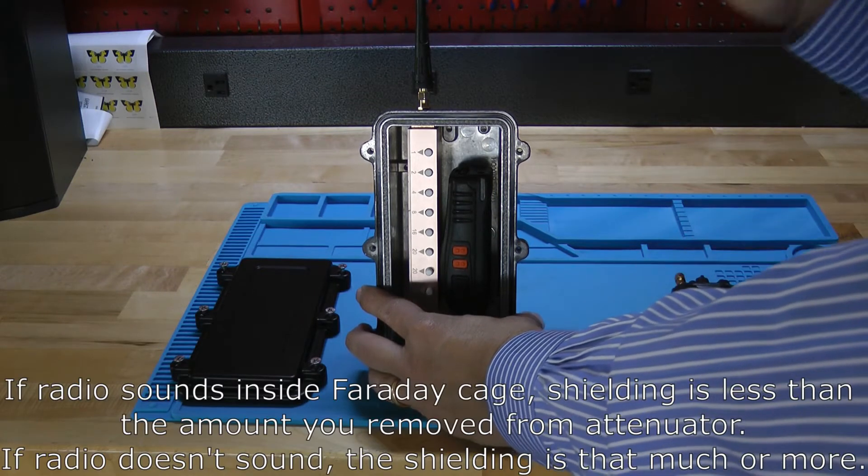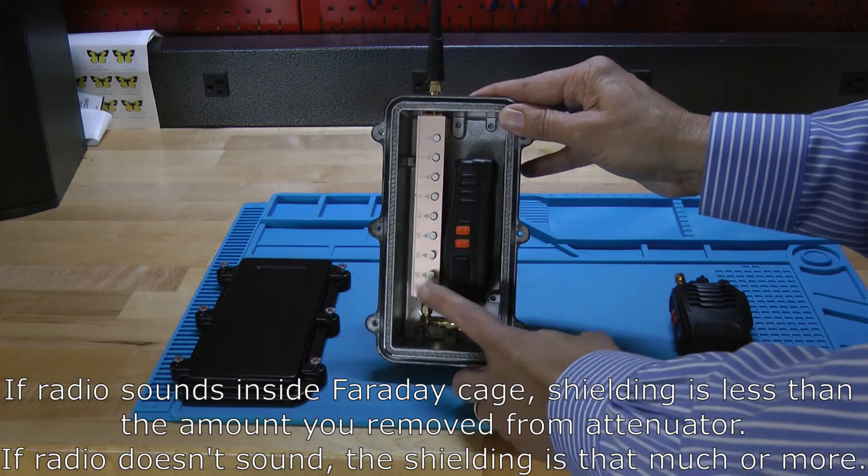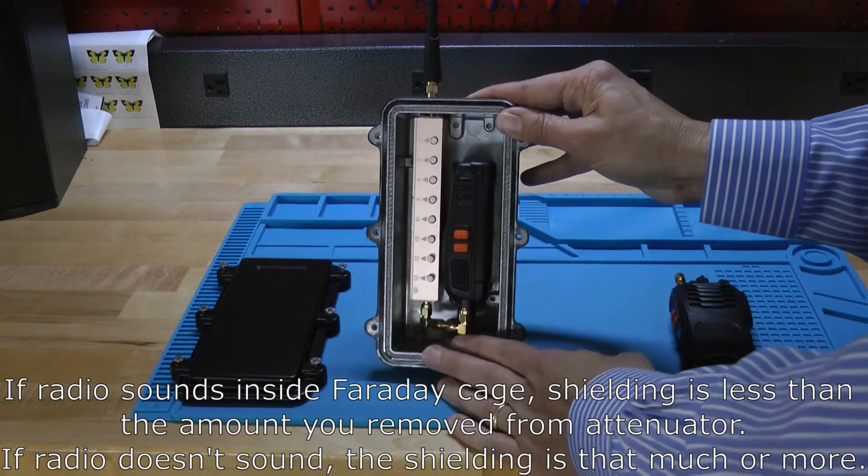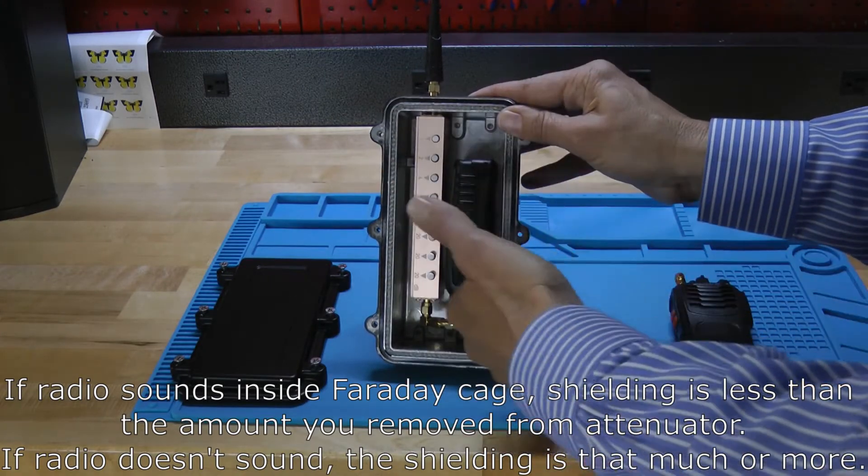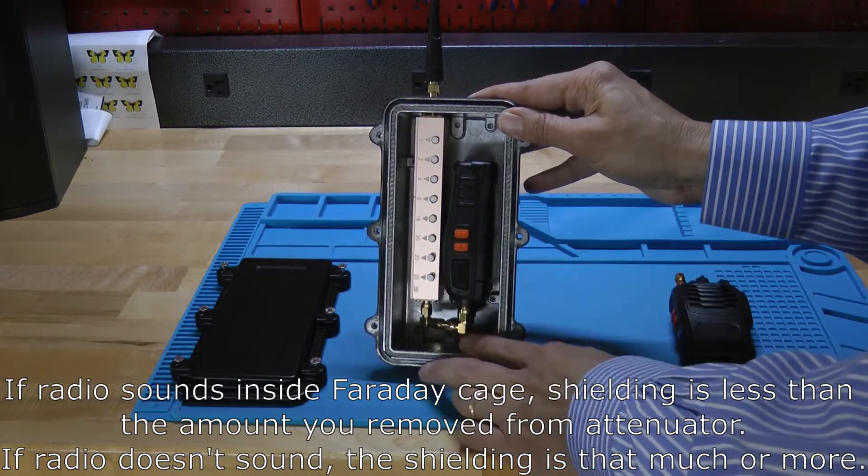If the radio turns on inside, it means that you don't have 40 dB of shielding, that your Faraday case didn't have 40. If it doesn't turn on, it means you have at least 40. You could have 40, you could have 41, you could have 50 or 60, but it means you have at least 40.